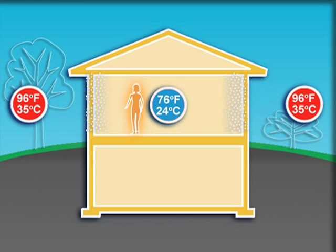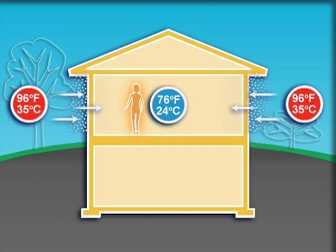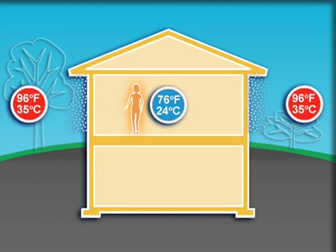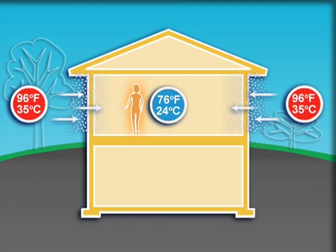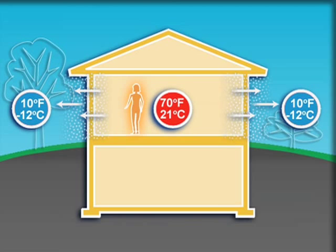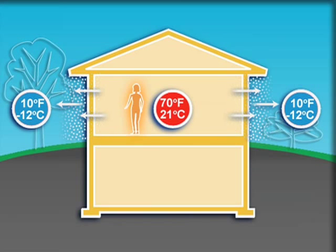The flow of water vapor occurs when a difference in humidity is present. For example, on a hot humid day, when the air conditioner is running, it is both cooling and dehumidifying the interior. This difference in humidity levels between outside and inside creates a flow of water vapor from the outside in. On a cold day, the flow of water vapor will move from the indoors to the outdoors when the relative humidity is higher inside.